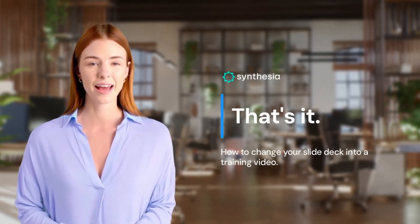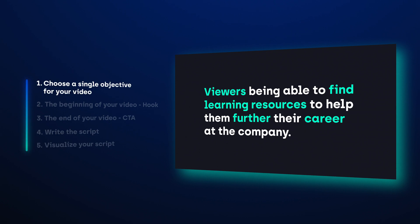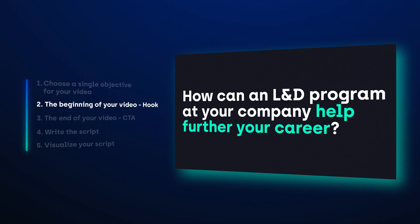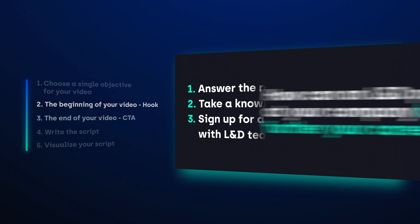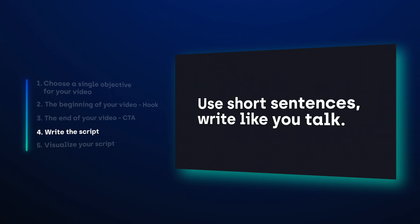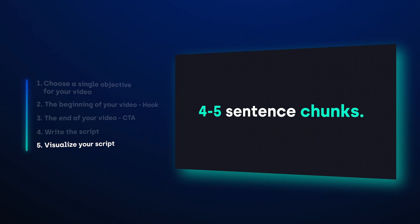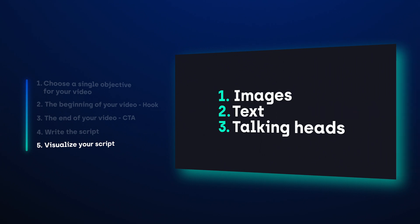And now, that's it — how to change your slide deck into a training video. Let's review the whole process one more time. First, we looked at our slide deck and chose a single objective for our video. Next, we wrote a hook to engage our viewers and tell them what our video was all about. After we wrote the beginning of our video, we wrote the end with a call to action. Then we talked about writing your script using a conversational tone. Finally, we chunked our script into four to five sentence chunks and ended with three techniques that you can use to visualize that script.